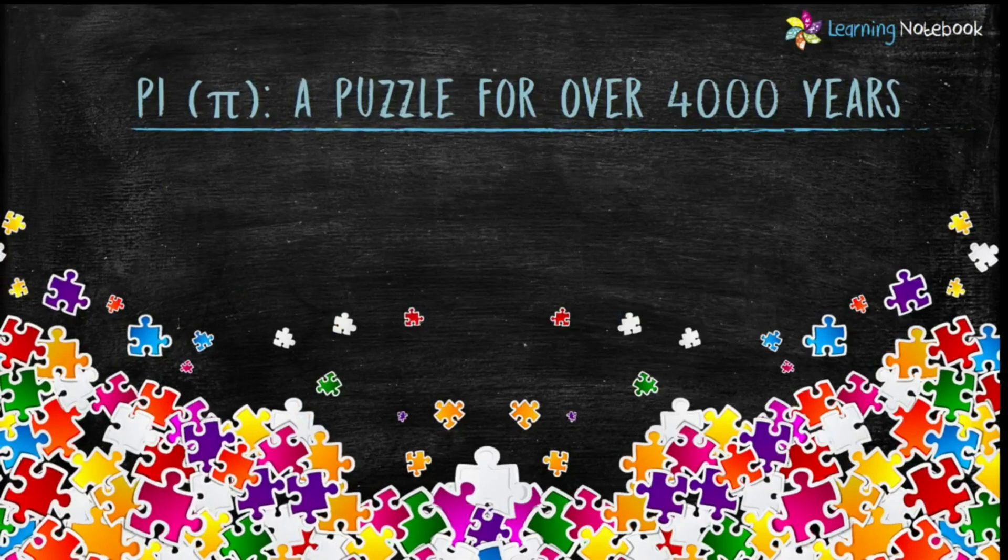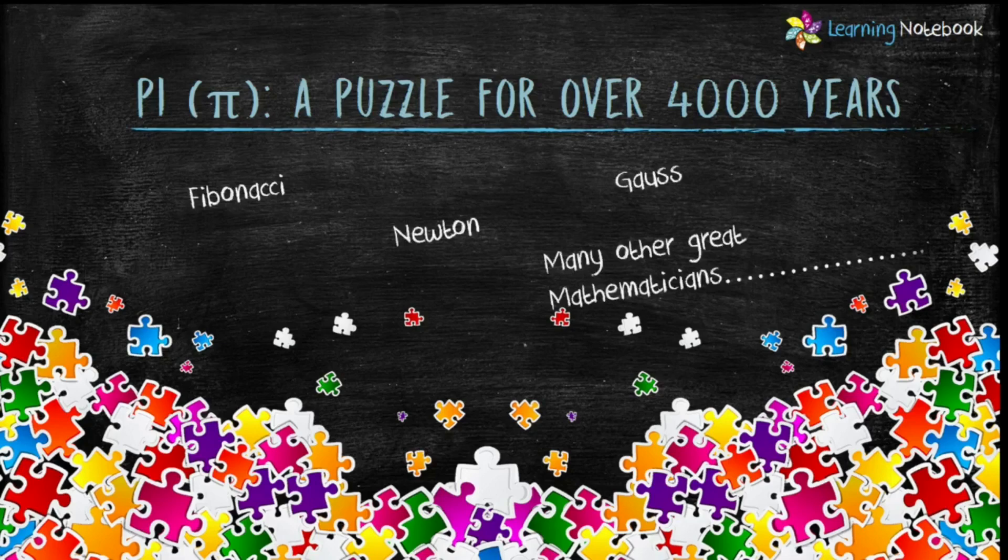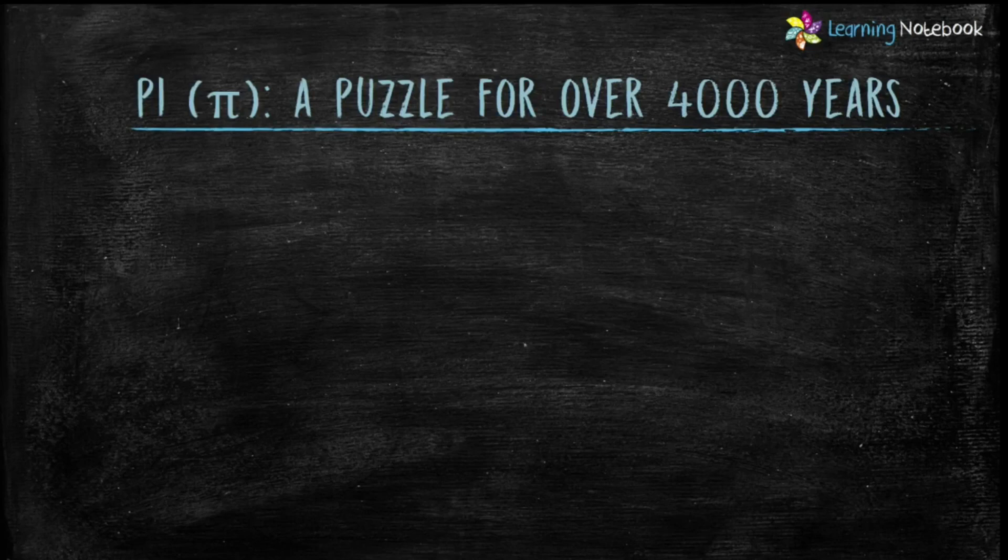Pi had been a continuous puzzle for mathematicians around the world for over 4000 years. Many famous mathematicians like Fibonacci, Newton, Leibniz, Gauss, and many more have spent considerable time to calculate the digits of pi.